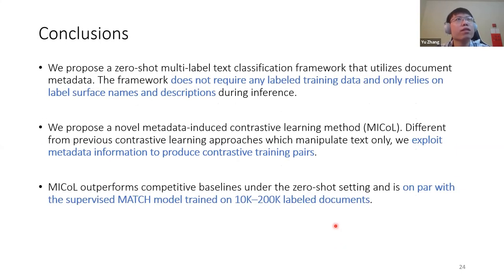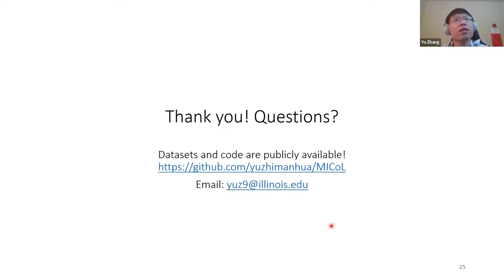To conclude our work, we propose a zero-shot multi-label text classification framework utilizing document metadata. We do not require any training data for any labels. We only rely on label surface names and descriptions. And we propose MICO, different from previous text-based contrastive learning methods, we exploit metadata information to produce contrastive learning pairs. Finally, we beat those zero-shot baselines and are on par with the supervised match model trained on 10,000 to 200,000 labeled documents, depending on which metric we are using. Our datasets and code are already on GitHub. That's all for my presentation. Thank you.